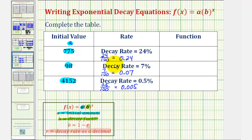Now that we have the decay rate as a decimal, this column now gives us r, which we can now use to write the exponential decay function. For this first row, we would have f(x) equals a, which is 775, the initial value, times b, which is our decay factor. Because we have decay, it's one minus r, so we have one minus 0.24 raised to the power of x.